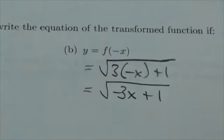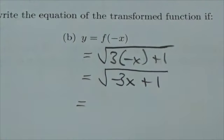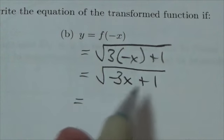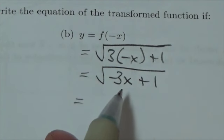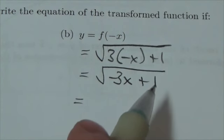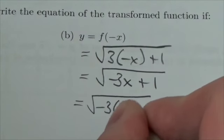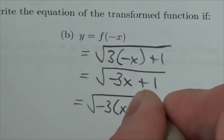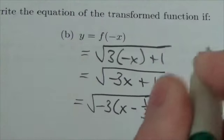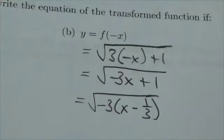And then I would encourage you, when you're working through problems like this, to take that one step further, because you know that at some point you're going to be asked for the horizontal translation as well. So you want to separate out that stretch and reflection from the translation. So this is going to become negative 3 times x minus 1 third. Okay, so I just take that 1 and divide it by the negative 3, and that's the expression that we're really hunting for here.